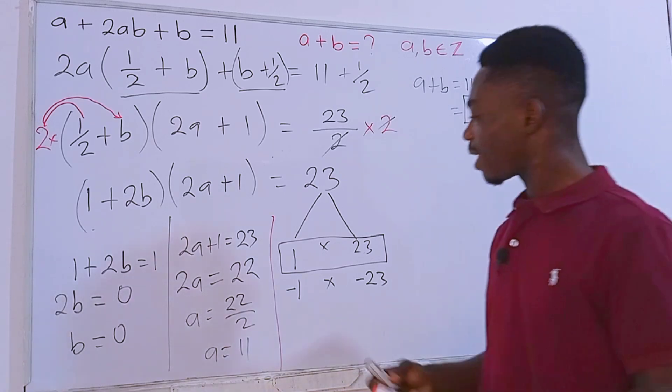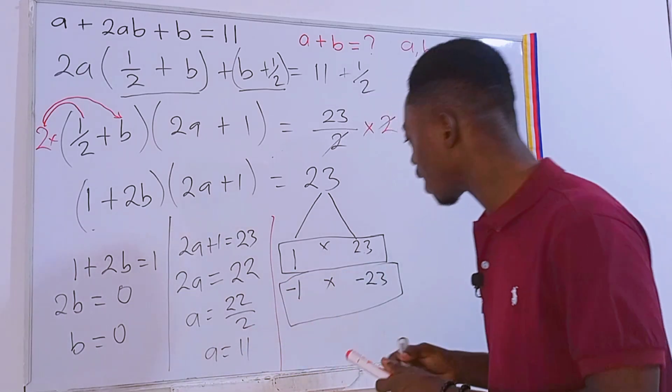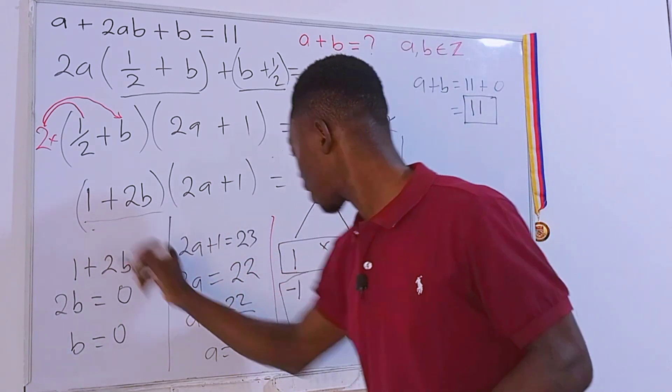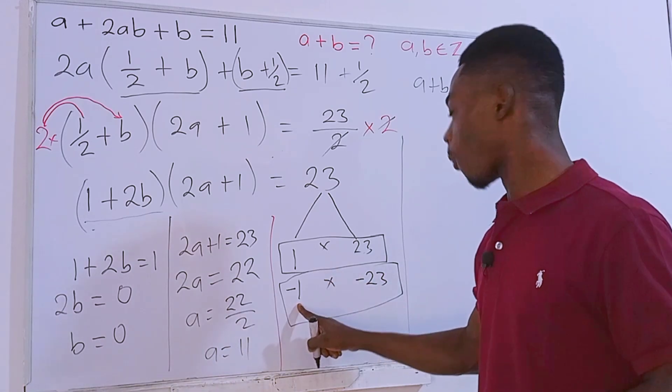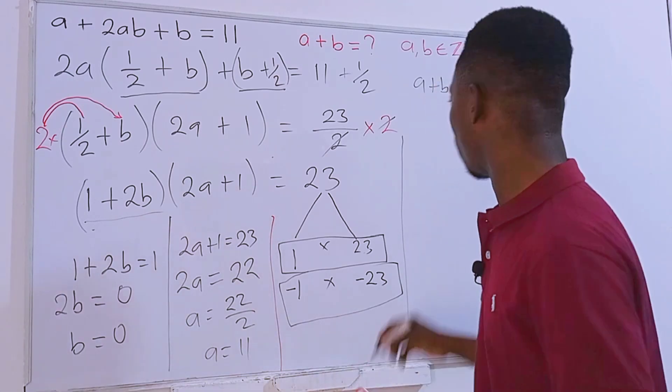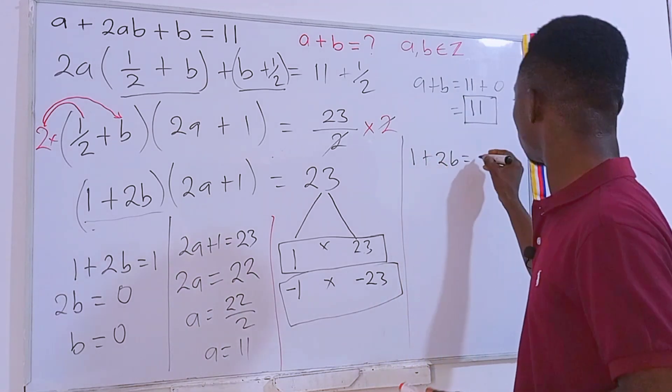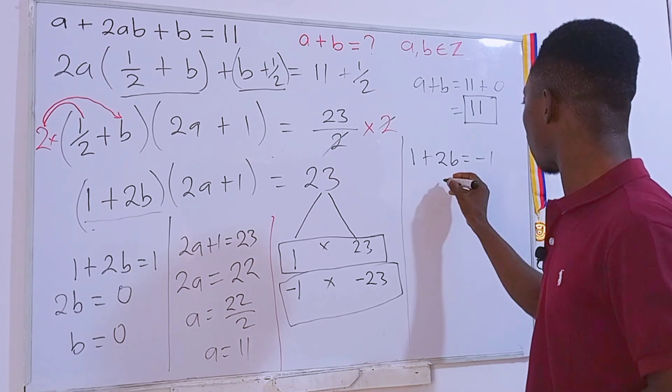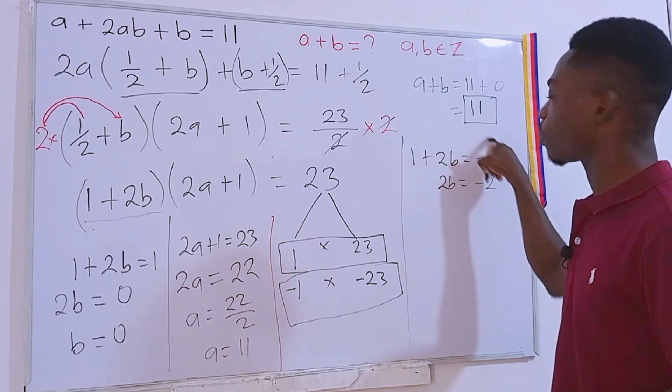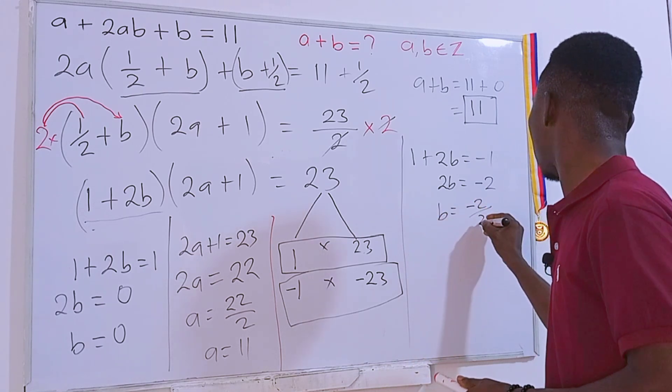Now let's come to the negative factors. In the same way, we can also form two equations. The first one is 1 + 2b = -1, and this implies that 2b = -2. If you transpose this one, you have b = -2 divided by 2, which is equal to -1.